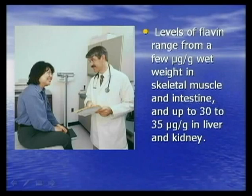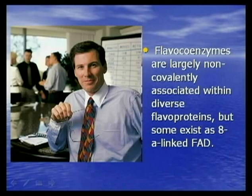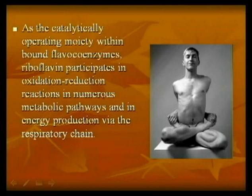Levels of flavins range from a few micrograms in brain, skeletal muscles, and testes, and up to 30 to 35 micrograms in liver and kidney. Flavocoenzymes are largely non-covalently associated with their flavoprotein, though some exist as 8-alpha-dimethyl-10 flavoproteins.